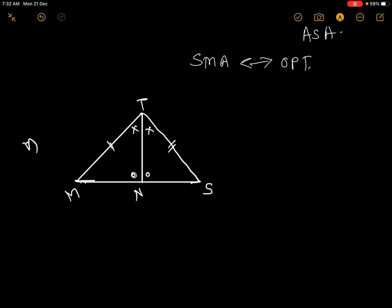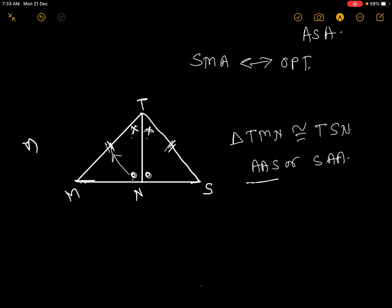See this pair of triangles. We are given: angle N is congruent to angle N in the second triangle, angle T in the first triangle is congruent to angle T in the second triangle, and side MT is congruent to side ST. Two angles and the side opposite to one of them — the test is AAS. Triangle TMN is congruent to triangle TSN. The test is AAS, and the correspondence is TMN corresponding to TSN.